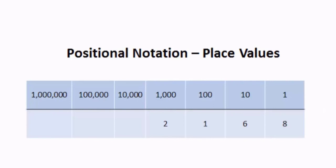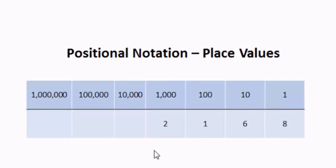You can see that we have the number 2 in the one-thousands place, so we have 2 one-thousands. We have a 1 in the hundreds place for 100. We have 6 in the tens place for 60. And we have 8 in the ones place for 8. So effectively, we have 2 one-thousands, 1 one-hundred, 6 tens for 60, and 8 ones for 8.